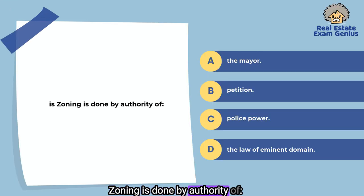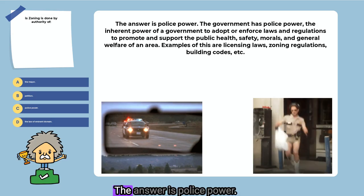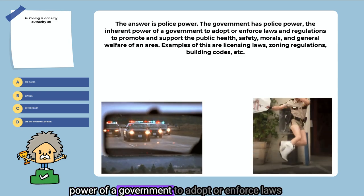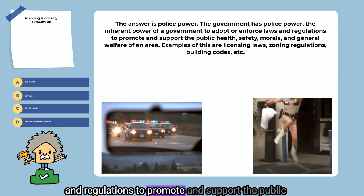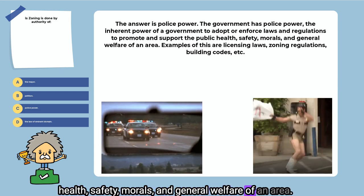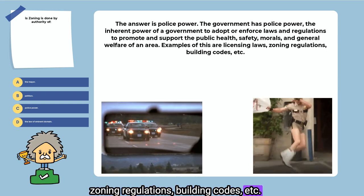Zoning is done by authority of: the mayor, petition, police power, or the law of eminent domain. The answer is police power. The government has police power — the inherent power of a government to adopt or enforce laws and regulations to promote and support the public health, safety, morals, and general welfare of an area. Examples of this are licensing laws, zoning regulations, building codes, etc.